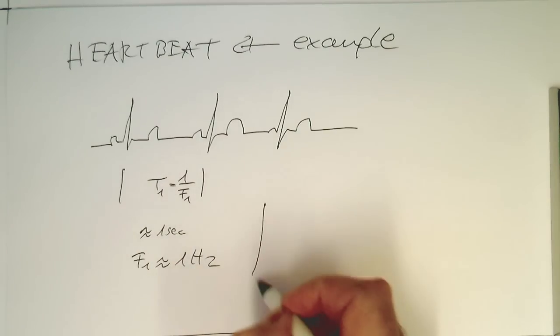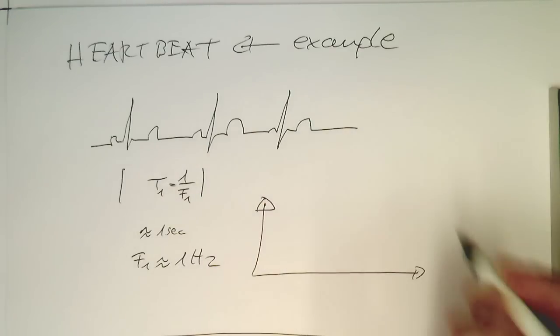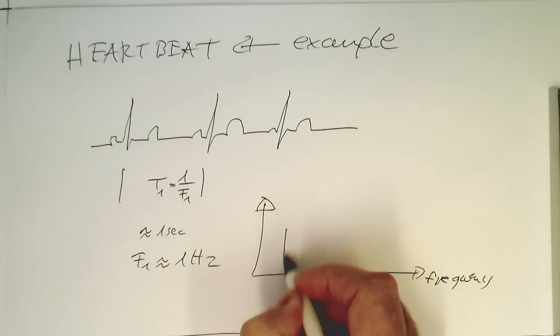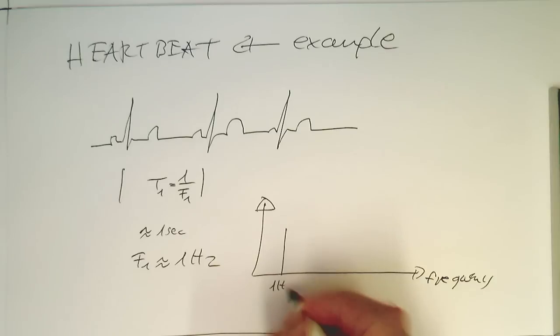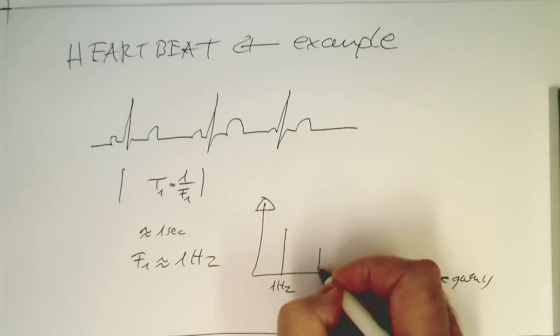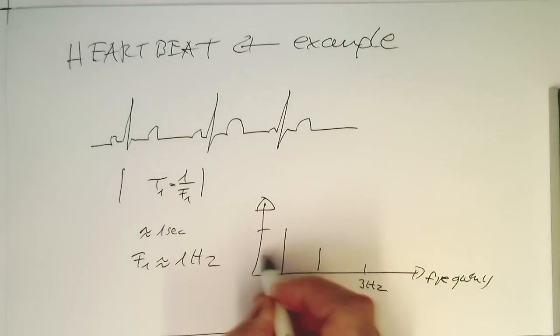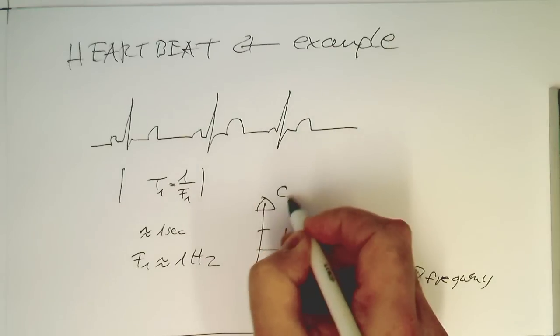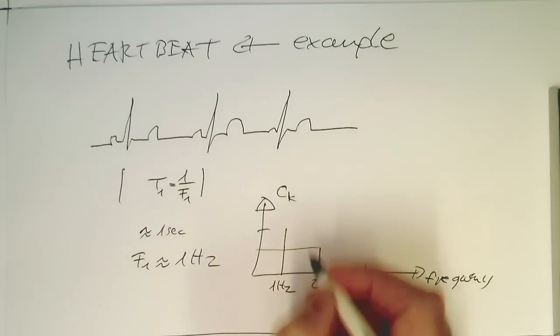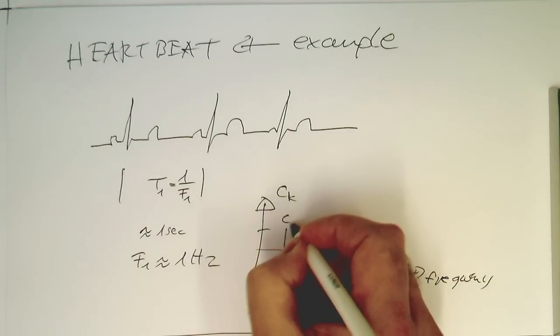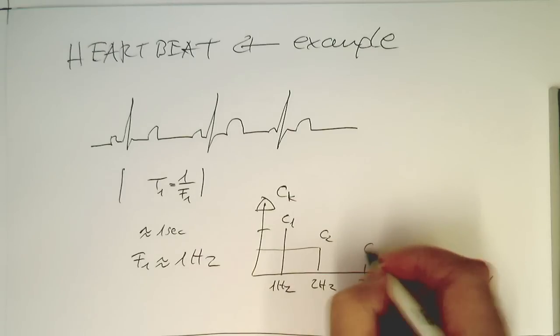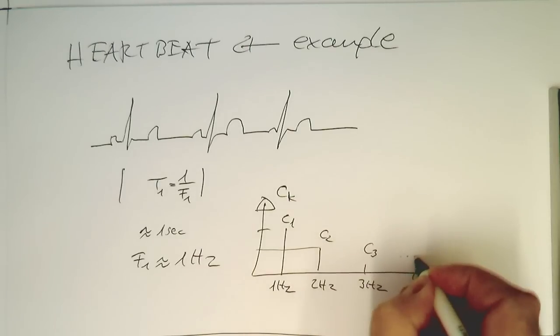If we're looking at a spectrum with frequency here, the first peak in our spectrum should be at 1 hertz, then at 2 hertz, then at 3 hertz, and so on. The height of these peaks are our ck values. This is c1, this is c2, c3, and so on.